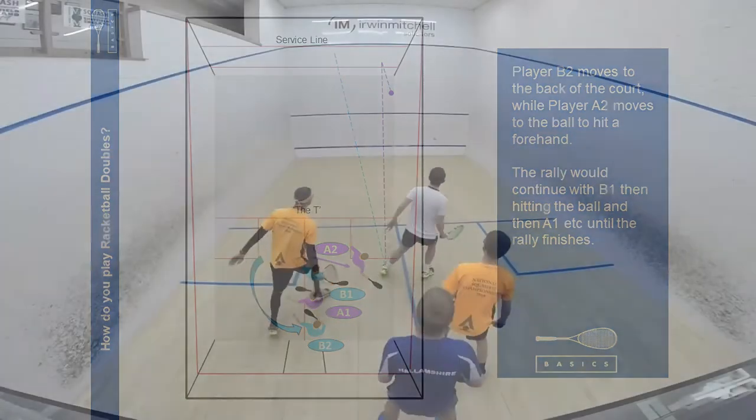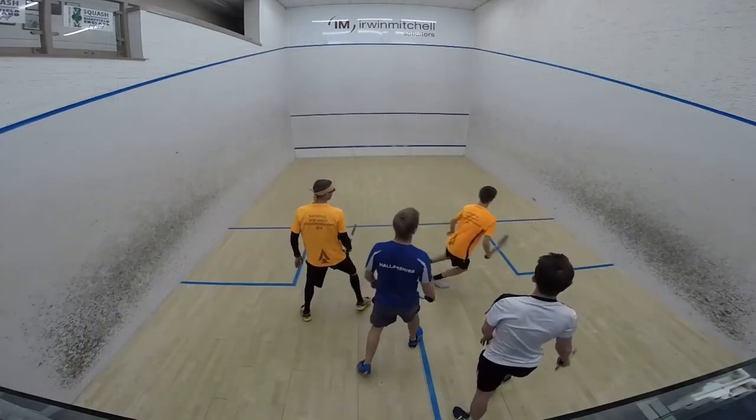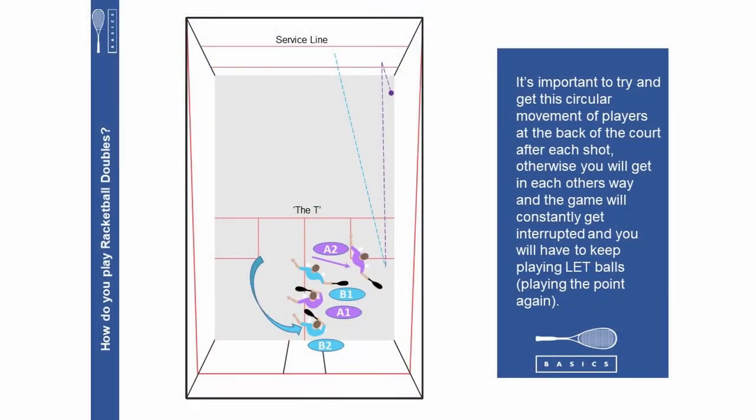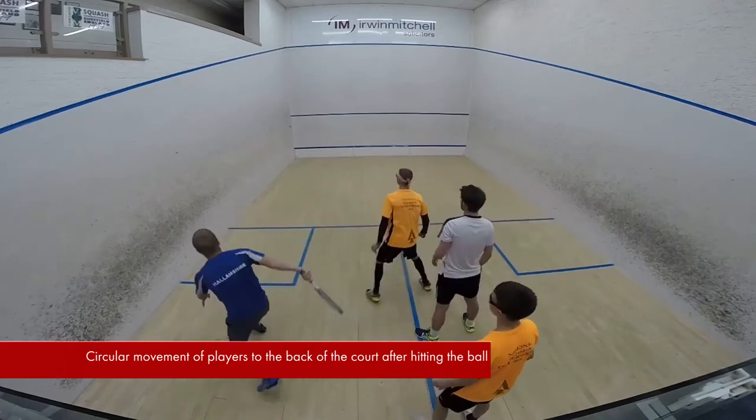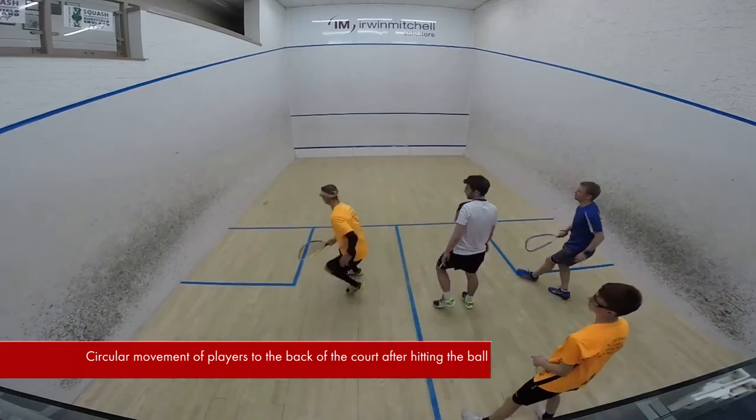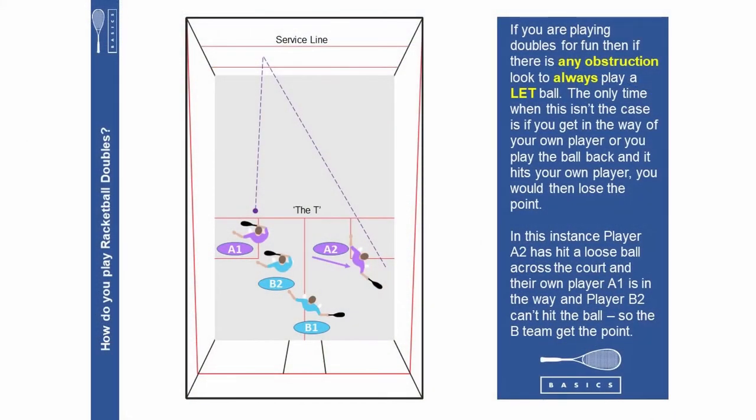It's important to try and get this circular movement of players at the back of the court after each shot. Otherwise you'll get in each other's way and the game will constantly get interrupted and you will have to keep playing let balls, playing the point again.